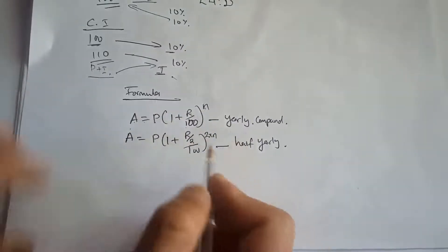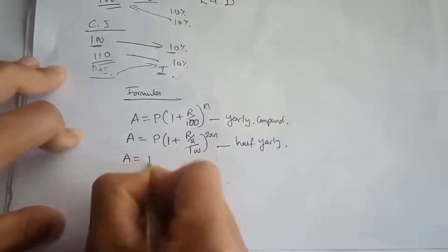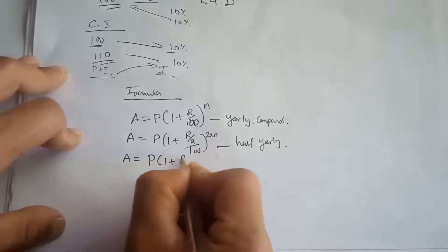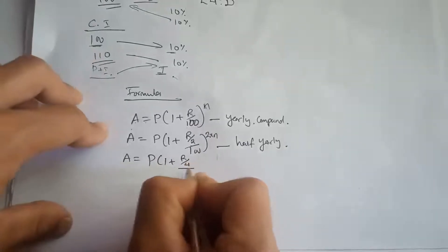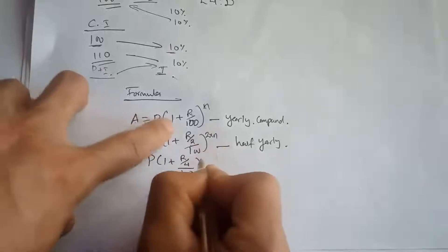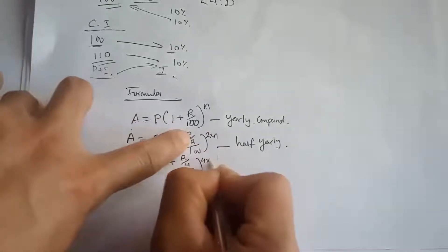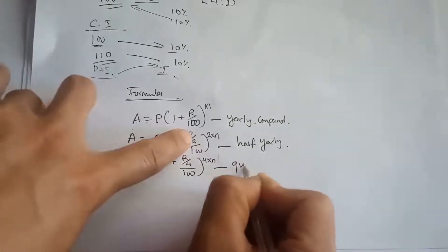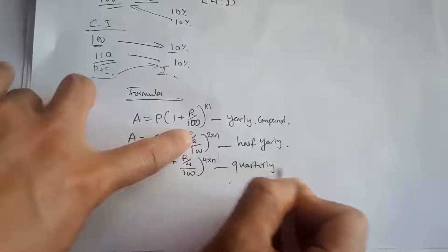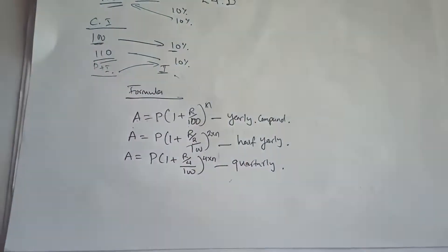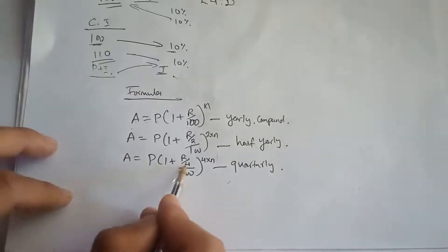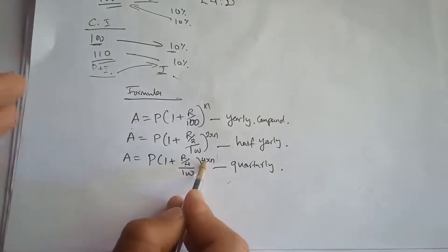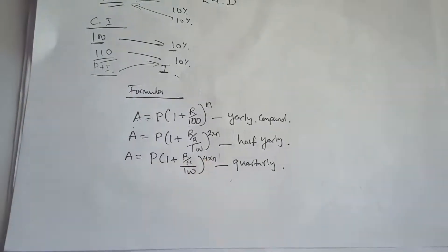For half-yearly compounding, the rate of interest is divided by 2 and the number of years is multiplied by 2. For quarterly compounding, R is divided by 4 and N is multiplied by 4. For monthly compounding, R is divided by 12 and N is multiplied by 12.